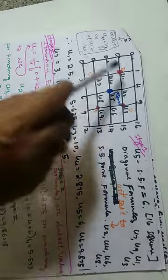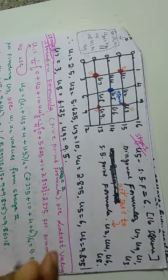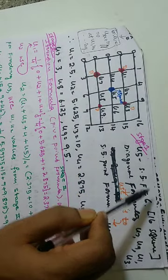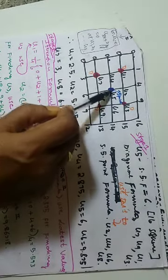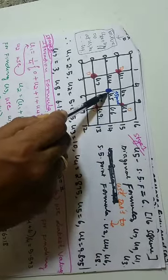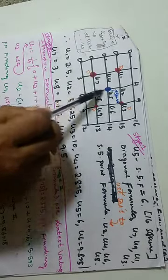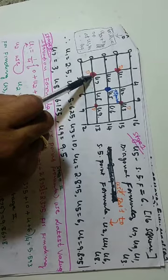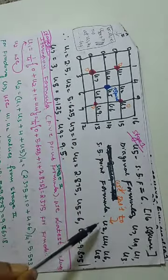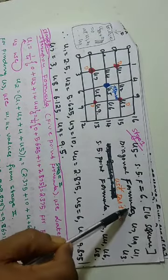Let us make use of the iteration formula. As I told you in the previous lecture, you calculate u5 — the center point — using the standard 5-point formula. For the corner points u7, u9, u1, u3, you are using the diagonal formula.